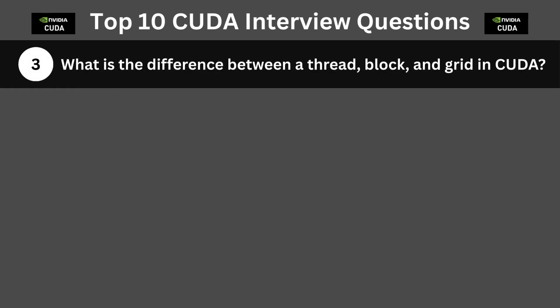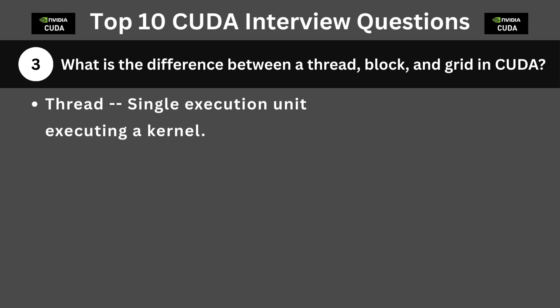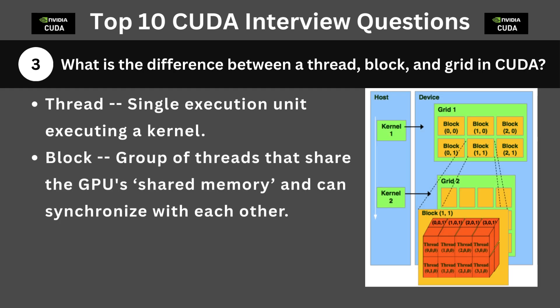The next question is: what is the difference between a thread, block, and grid in CUDA? A thread is a single execution unit executing a kernel. A block is a group of threads that share the GPU's shared memory and can synchronize with each other. A grid is a collection of blocks, and all blocks in a grid can execute the same kernel. The figure here shows how thread, block, and grid are arranged within the CUDA kernel.